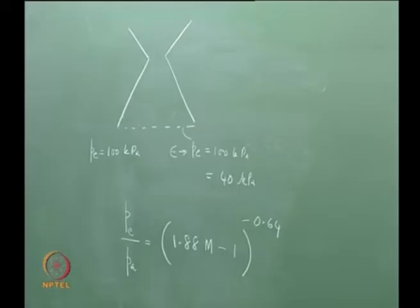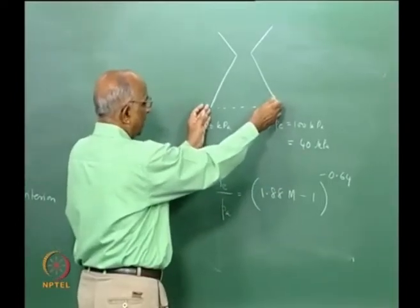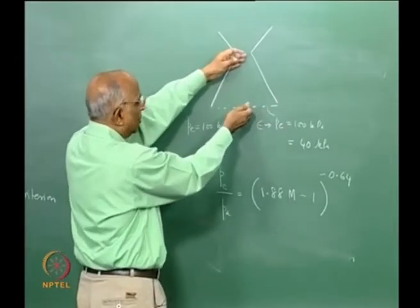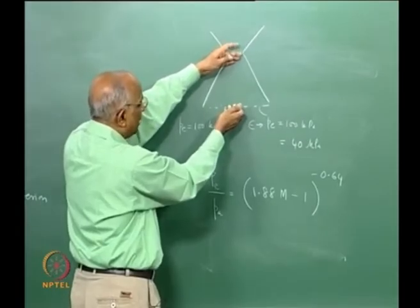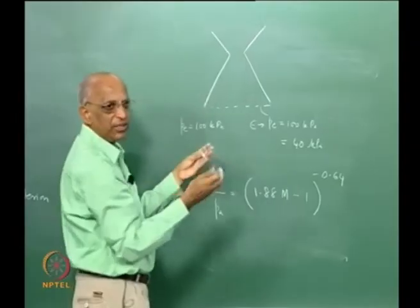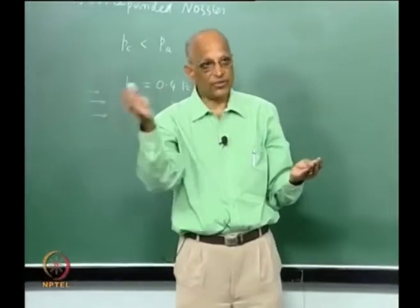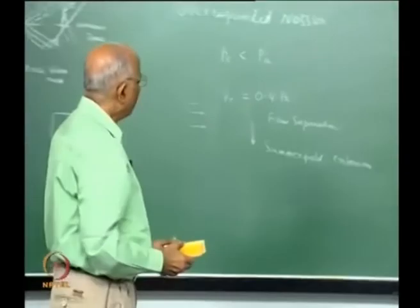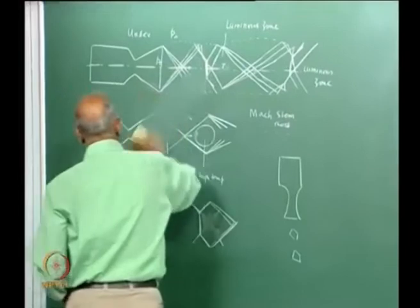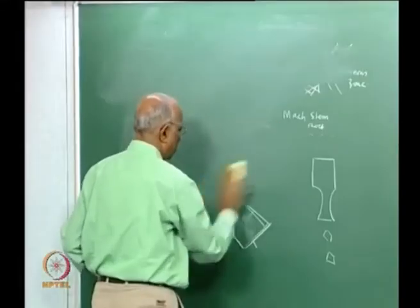By now we get a feel for a nozzle. The nozzle area ratio depends on ambient pressure, which keeps varying in flight, so we need variable area ratio nozzles. When we talk of variable area ratio nozzles, we must consider under-expansion and over-expansion. By under-expansion we lose performance; by over-expansion we get side loads which are harmful. Having seen that, let us go to the next phase: we would like to know what is the thrust or force generated by the rocket.